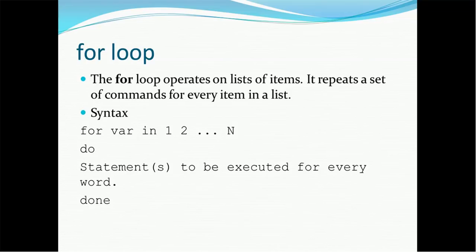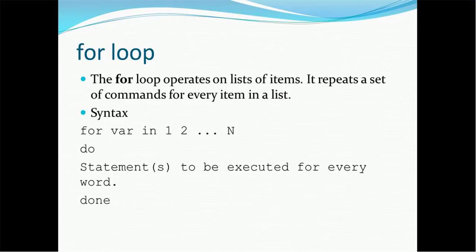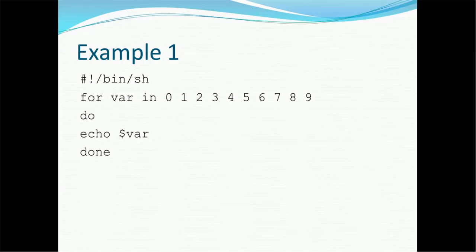The next kind of loop is the for loop. The for loop operates on a list of items; it repeats a set of commands for every item in the list. For example, if you want to iterate from number one to N, instead of writing a while loop we can use the for loop. The syntax is: for as a keyword, then the variable name to store the value temporarily, then in, then all the values. After the condition, write do, then the logic, and at the end done.